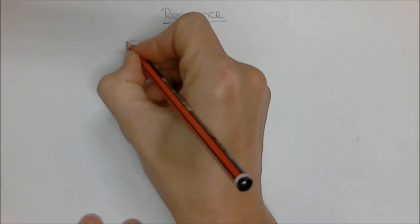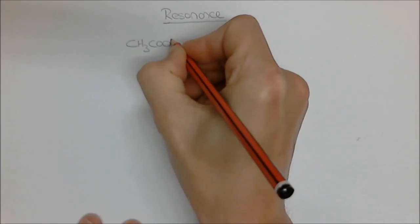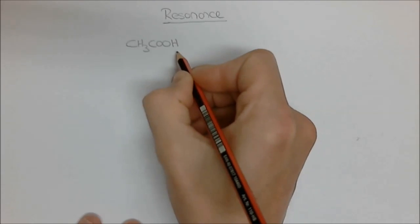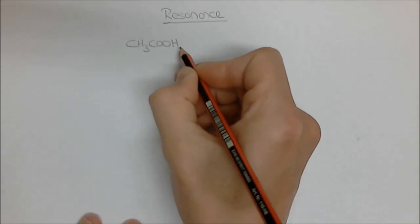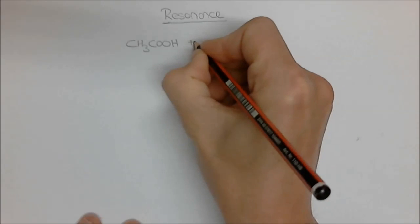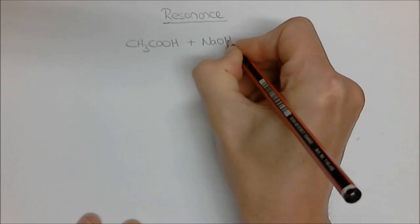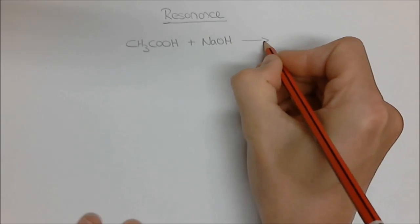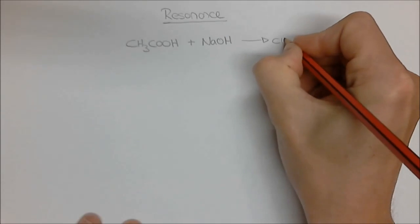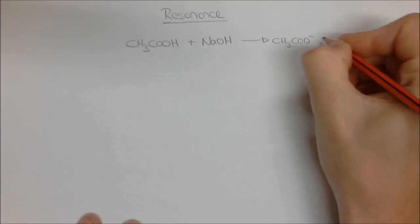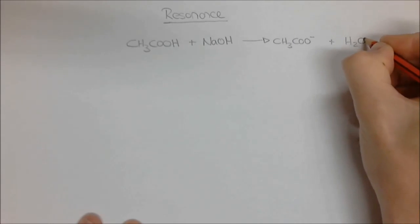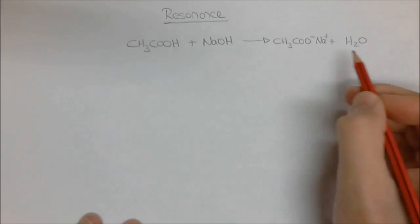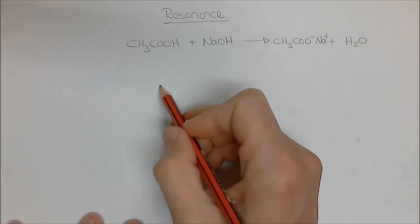I'm going to start off with a molecule of acetic acid, CH3COOH. By now you will have learned that this is a carboxylic acid functional group — COOH — and carboxylic acid groups are called acids because this proton is acidic. If we do some acid-base chemistry and add sodium hydroxide, this base will easily pick up that proton, and we get the carboxylate CH3COO⁻ plus H2O, with the minus associated with the sodium counter ion. That's a standard acid-base reaction.